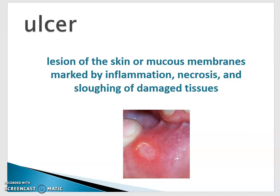The next skin disorder we're going to look at is an ulcer. This is a lesion of the skin or mucous membranes marked by inflammation, necrosis, and sloughing of damaged tissues. Necrosis means basically a condition of dead tissue, and sloughing is what our body does to get rid of cells — they peel off when they have no more useful life. This is not infection, but there's definitely inflammation involved.